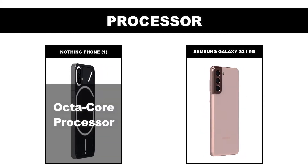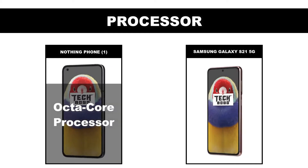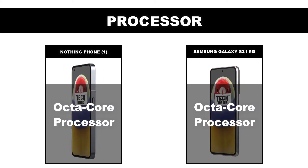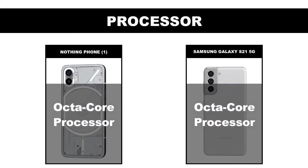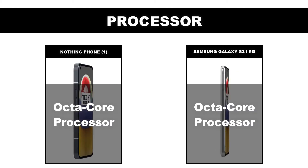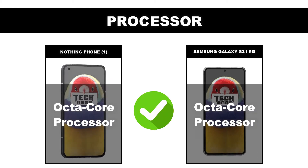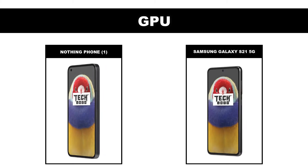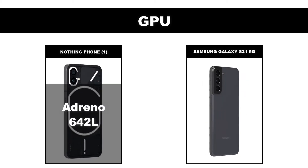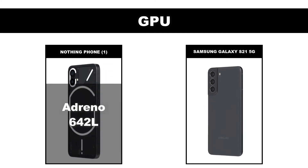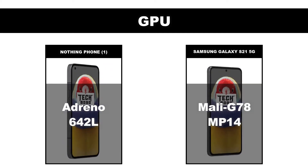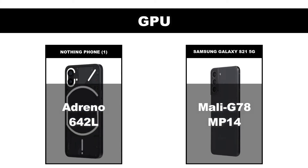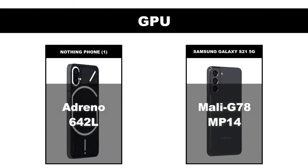Processor: Nothing Phone 1 is octa-core, Samsung Galaxy S21 5G is octa-core. GPU: Nothing Phone 1 is Adreno 640, Samsung Galaxy S21 5G is Mali-G78 MP14 (International).